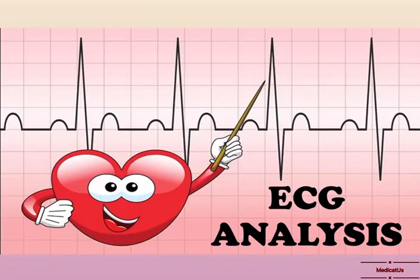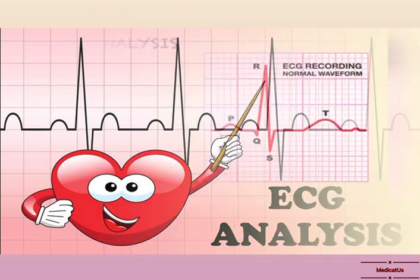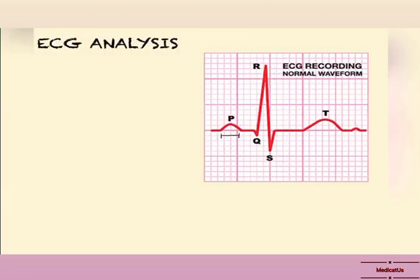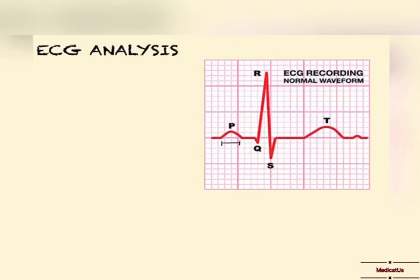In this video we will be discussing ECG analysis and how normal ECG graphs should look. Before starting, we should know the duration of one small square in ECG, which is 40 milliseconds.